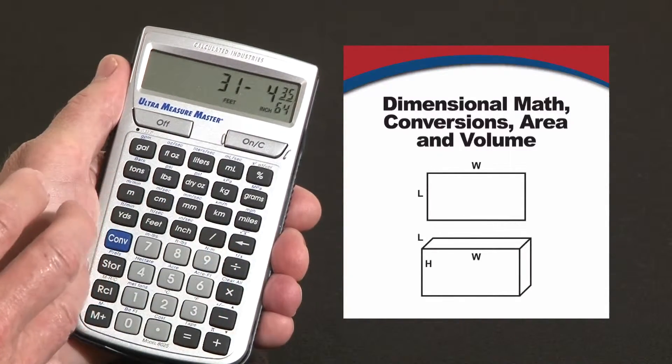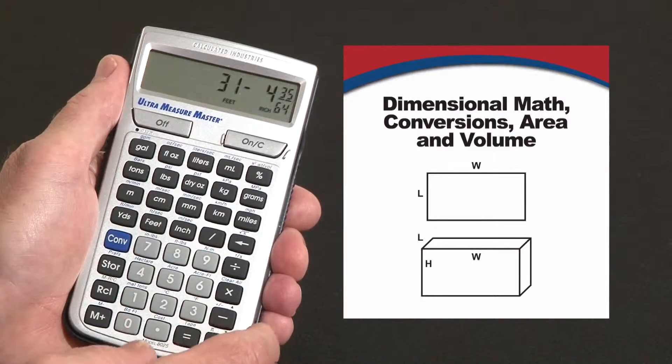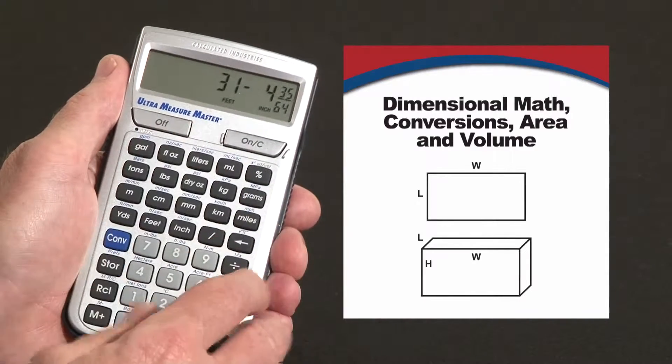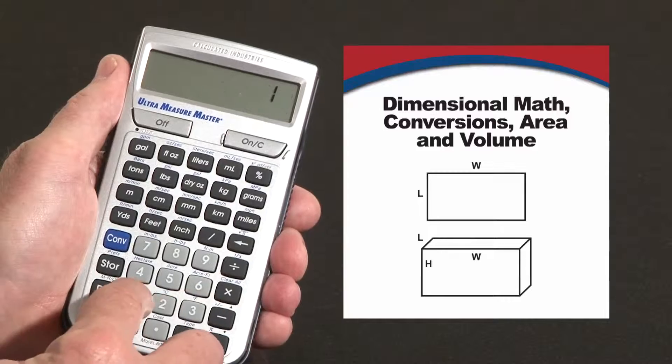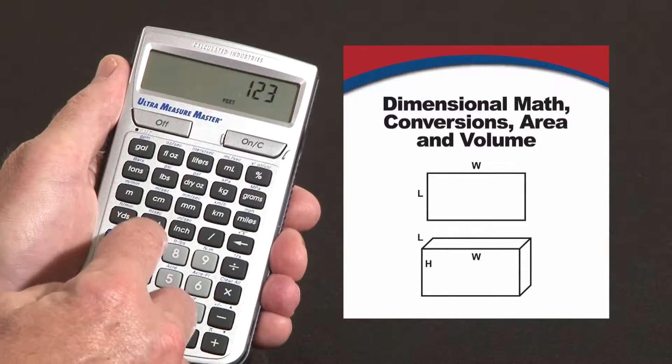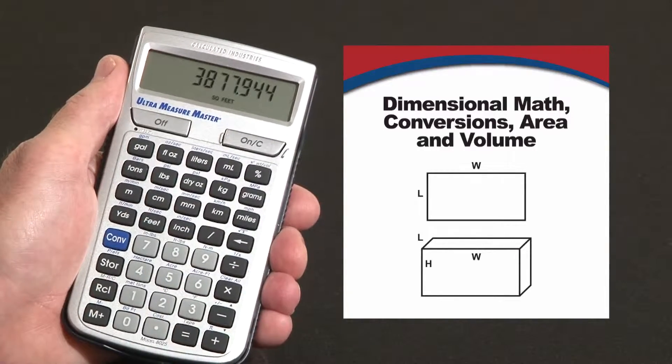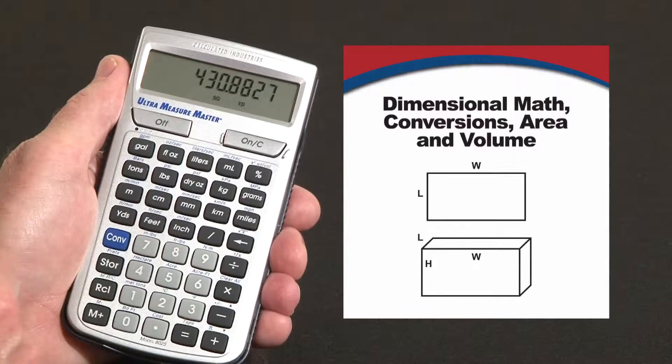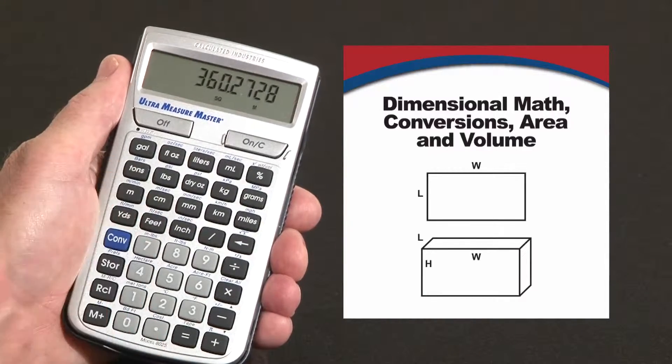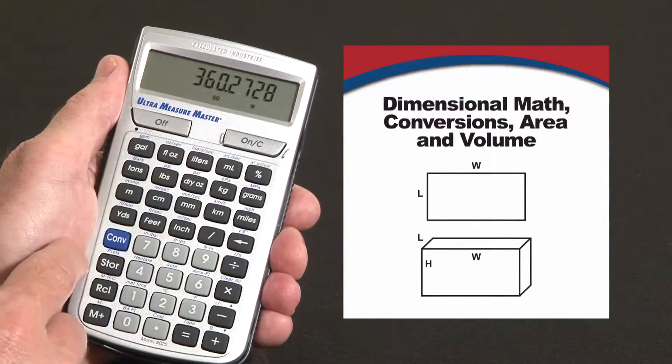You could figure out areas and volumes. Say that's one side of something you want to calculate the square area or square footage of. Let's say times 123 feet seven inches gives you a large square foot area or square yards area or square meters area, inches, centimeters, what have you.